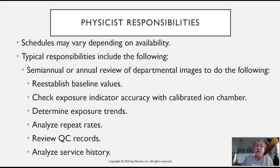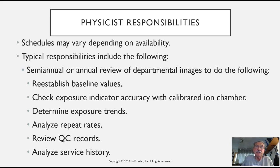They analyze repeat rates. Repeat rates are important because they indicate a technologist who may be having trouble positioning a certain projection — for example, an open mouth projection of the odontoid or hips. They would help identify that a technologist maybe needs remediation. Repeat rates are also revealing to department management. The physicist reviews quality control records to determine whether equipment is aging or still operating within the manufacturer's recommendation, and also analyzes the service history.